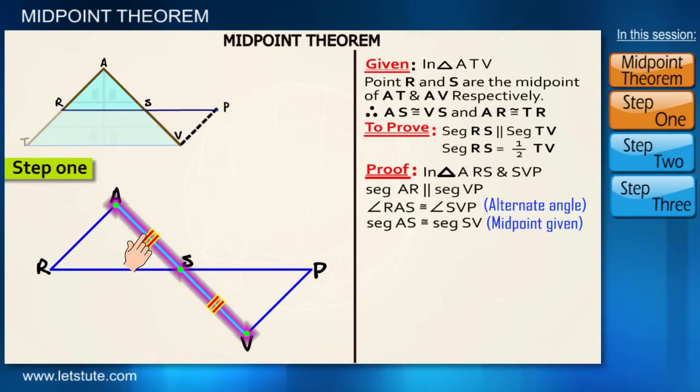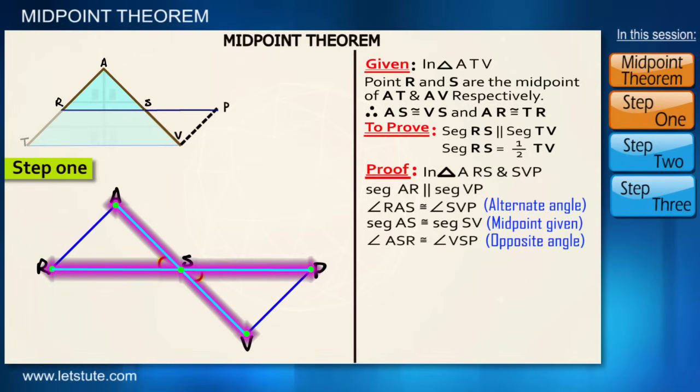Angle ARS is congruent to angle SVP, and the segment AS is congruent to segment SV because point S is the midpoint of AV, right?